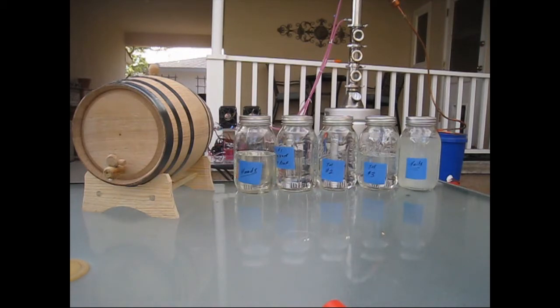You can see the color difference between that and the center two jars, which is the body, the main product. Far jar on the right is called the tails. You can see how that's cloudy. The tails can be mixed back in with your next batch when you distill. Jar number three, you can see it just started to get a little cloudy, that's why I cut it there, and the last jar is all tails.